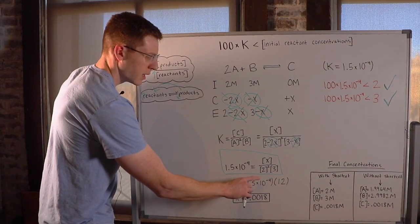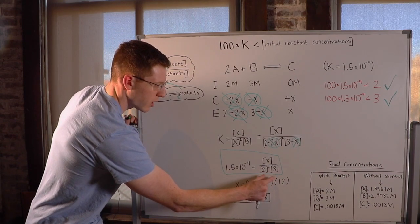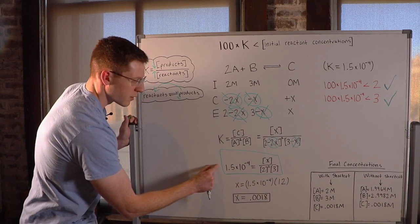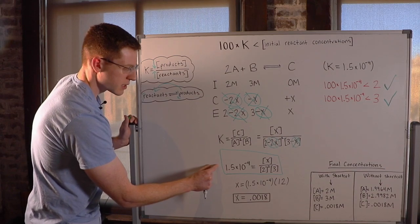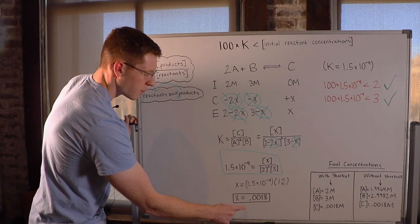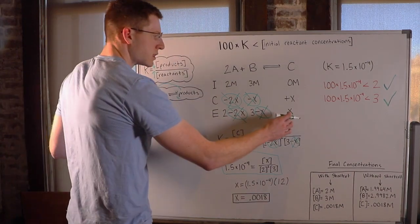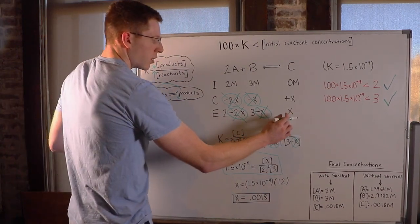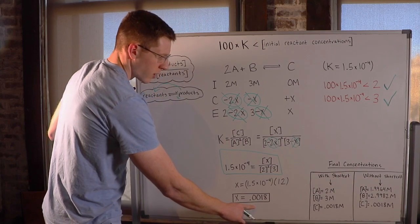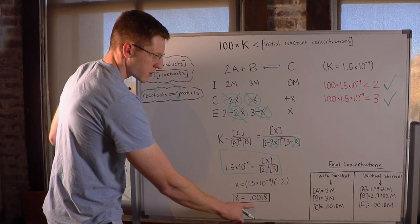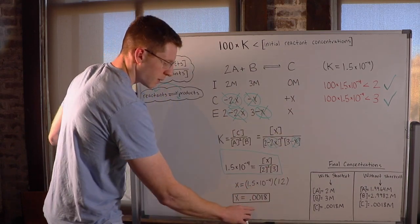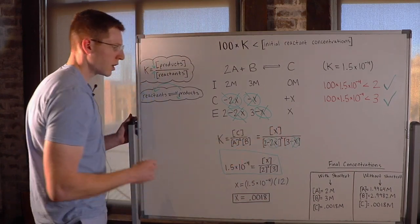So with a little bit of rearrangement, you'll see that 2 squared times 3 is 12. Bring the 12 over here by multiplying it by both sides, and you get X equals 0.0018. So that means the X in our equilibrium row is worth 0.0018. So our final concentration of C here would be 0.0018 molar.